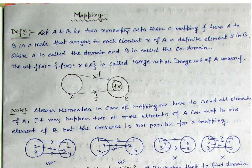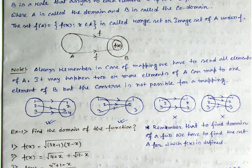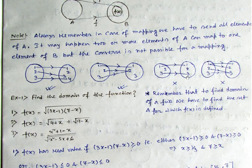Now to remember the well-definedness of a mapping: one element of A should go to exactly one element of B — one element corresponds to exactly one element. In case of mapping, one element of A cannot map to two or more elements in B. That is, one-to-many is not allowed, but many-to-one may be allowed. Many-to-one is possible in mapping but one-to-many is not possible. To understand the behavior of mapping, I have discussed some graphical representations here — you can check by yourself whether they are forming a mapping or not.